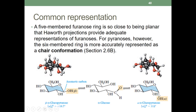Since both carbons 2 and 3 are down here, and the positions alternate axial down, axial up — down, up, down — they are both in equatorial positions. The only thing that differs between alpha and beta is the OH on the anomeric carbon: if it's up, it's beta; if it's down, it's alpha. So this is alpha-D-glucopyranose and beta-D-glucopyranose.